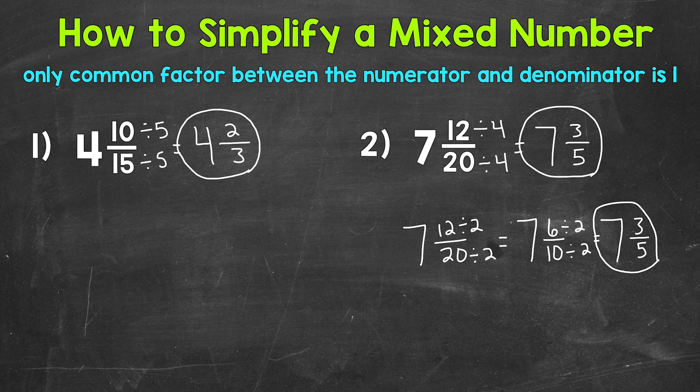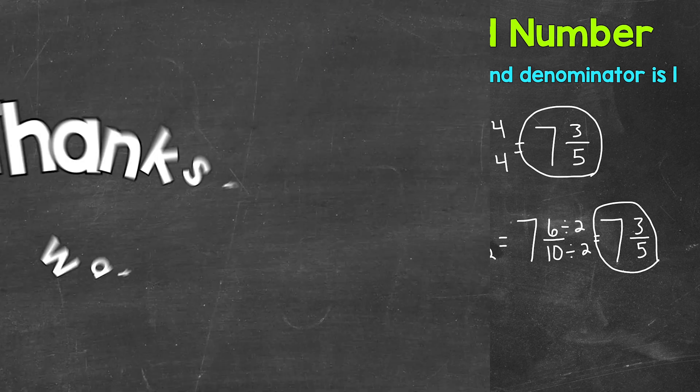So there you have it. There's how you simplify a mixed number. You only need to simplify the fractional part of the mixed number. You leave the whole number alone. So if you're able to simplify fractions, you're able to simplify mixed numbers. If you're looking for more help with simplifying fractions, I added links to more videos down in the description. I hope that helped. Thanks so much for watching. Until next time, peace.